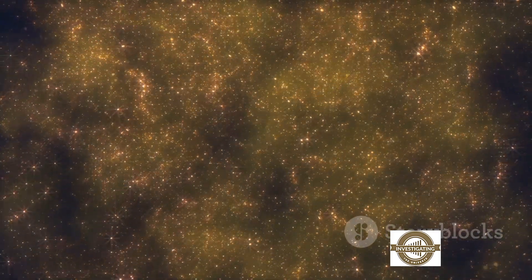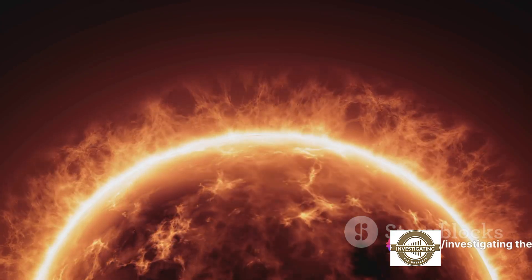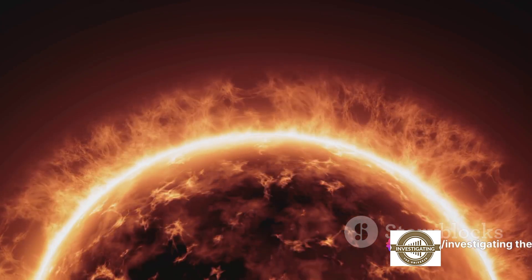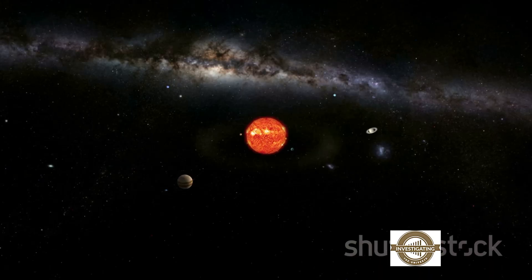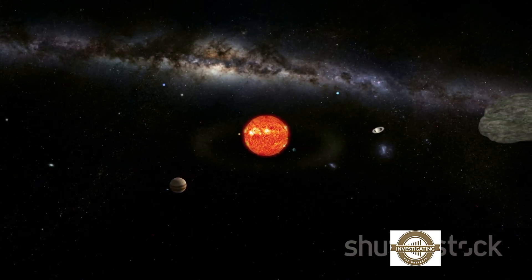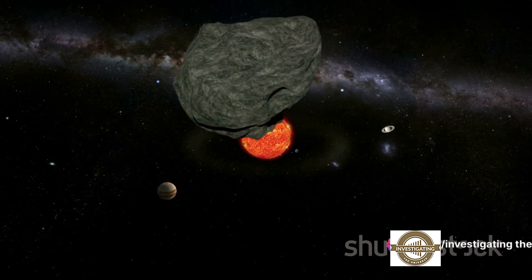Now, let's put things into perspective. Betelgeuse is not just another star. It's a red supergiant, a stellar titan with a size and brightness that dwarf our sun. If you could place Betelgeuse in our solar system, it would extend beyond the orbit of Mars, swallowing up Mercury, Venus, Earth, and the red planet.